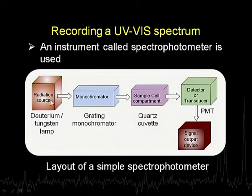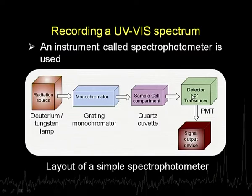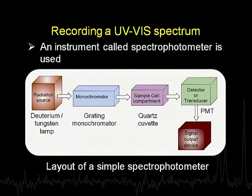The monochromator can be tuned to give say 200, 201, 202 nanometers or whatever wavelength we want. So from the source, polychromatic radiation passes through the monochromator and we get monochromatic radiation that falls on the sample in a cuvette - typically a quartz cuvette. If the sample has some absorbing chromophore, some of the radiation will be absorbed, and whatever comes out is detected by the detector, which is typically a PMT, a photomultiplier tube. This detected signal is then sent to an output device which gives out a spectral output. There are five essential components which are a must for any spectrophotometer.